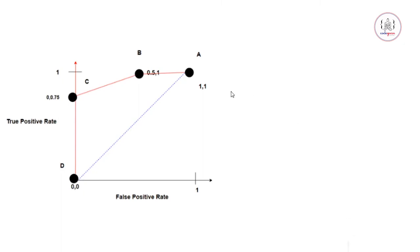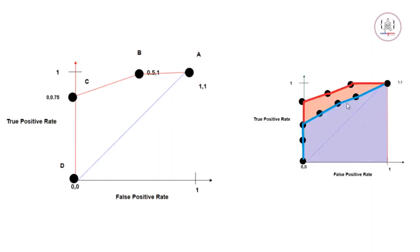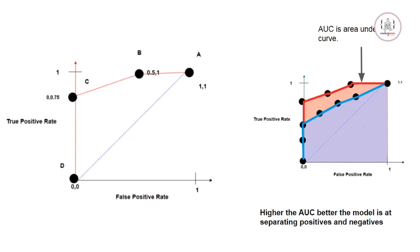We join all these points using a curve — this is your ROC curve. You plot all these points at different threshold values and observe the false positive rate and true positive rate at each threshold. The shaded region under this curve is the AUC, that is, the Area Under the Curve. The higher the AUC, the better your model is at separating positives as positives and negatives as negatives.